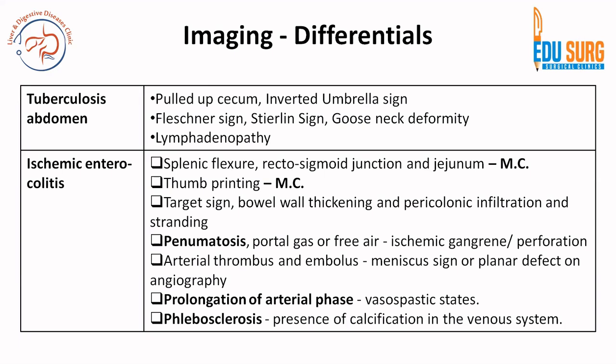Coming to ischemic enterocolitis — the most common sites are the vascular watersheds: the splenic flexure and the rectosigmoid junction in the colon, and the jejunum in the small bowel. Very commonly asked question: splenic flexure, rectosigmoid junction, and jejunum are the vascular watersheds. The most common sign seen is thumb printing. Other features include target sign, mural thickening, and pericolonic infiltration and stranding, which produce a target sign. Like mural stratification, the target sign involves alternating enhancement, so these features will reverse between CT and MR — important to remember.